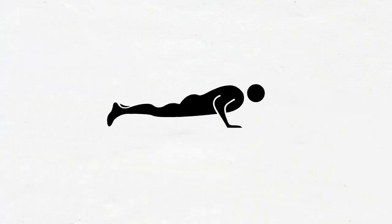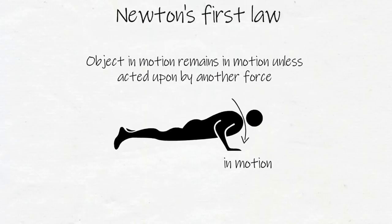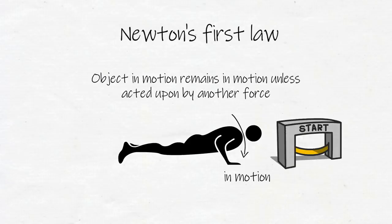Once Guise got down on the ground and did that one push-up, he was in motion, and an object in motion remains in motion unless acted upon by another force, which in physics is Newton's first law of motion. Start a micro-action, then get out of the way and let physics take over.